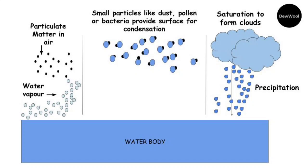This happens when the air becomes completely saturated and any excess moisture present in the atmosphere starts falling towards the earth's surface, which is called precipitation. When the precipitation is in the form of water droplets, it is called rainfall.